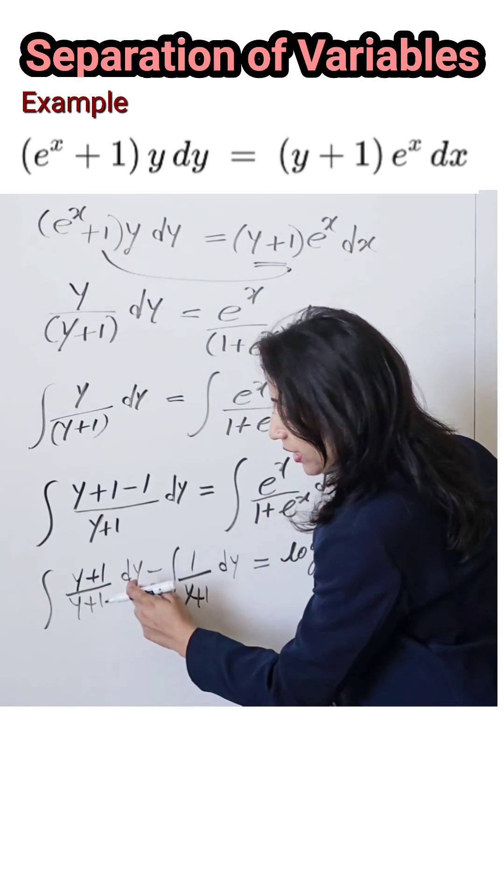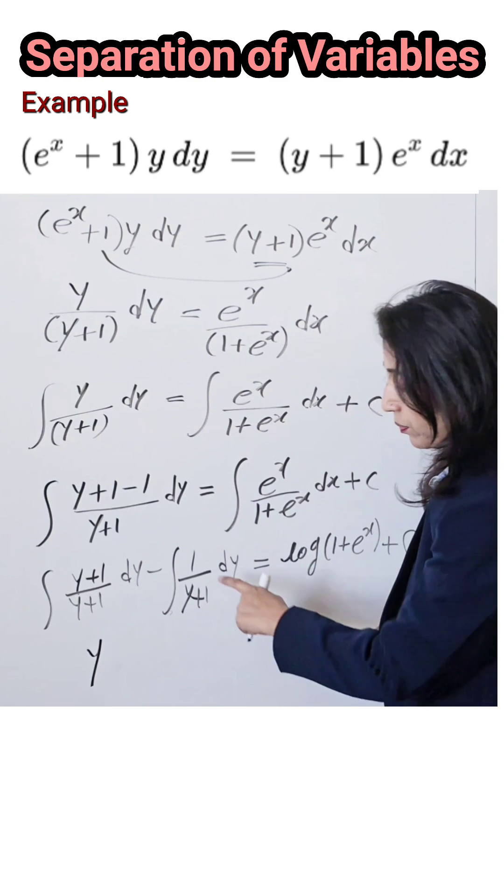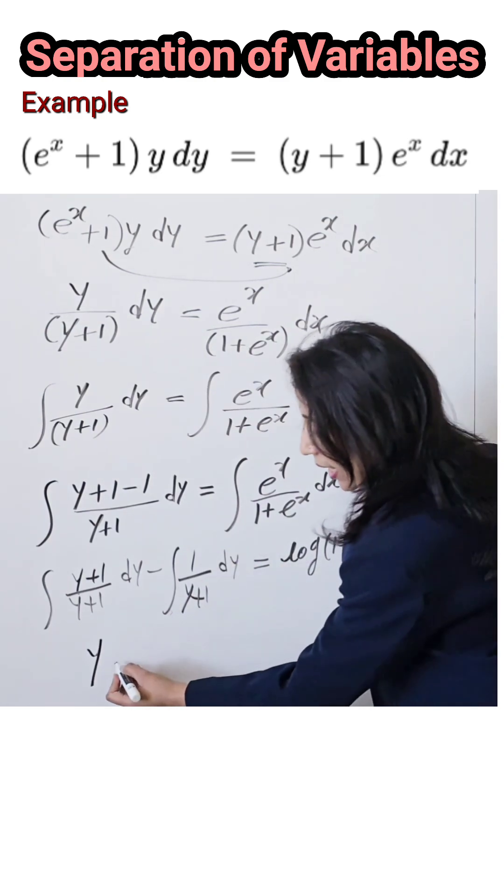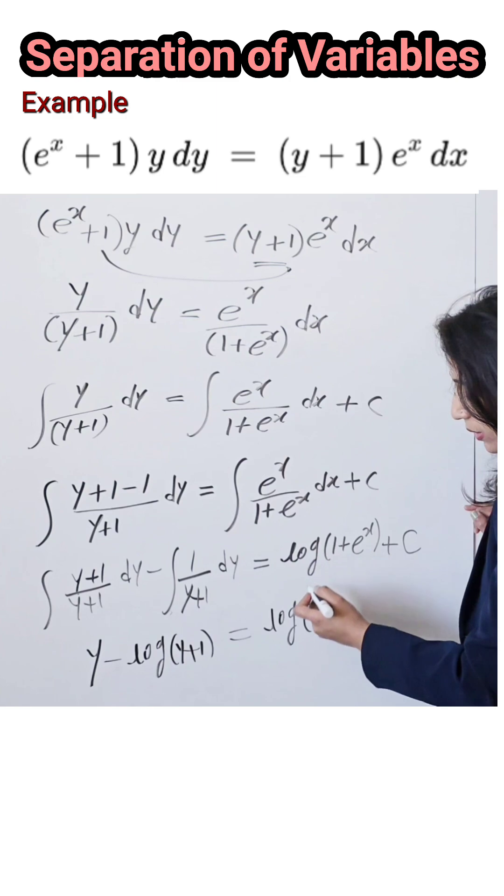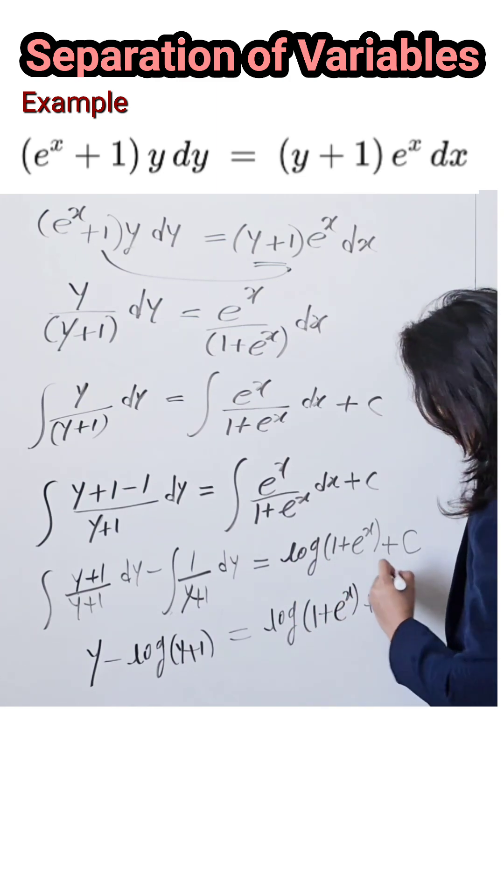Integration of dy is y, and 1 upon (1+y) is log of (y+1), equal to the right side which is log of (1 + e^x) plus c. Hence we get the answer.